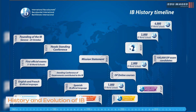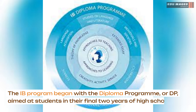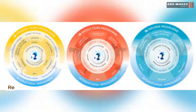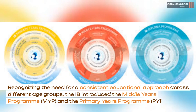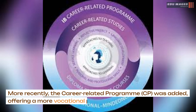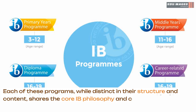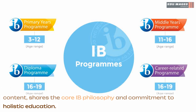The IB program began with the Diploma Programme, or DP, aimed at students in their final two years of high school. Recognizing the need for a consistent educational approach across different age groups, the IB introduced the Middle Years Programme, MYP, and the Primary Years Programme, PYP. More recently, the Career Related Programme, CP, was added, offering a more vocational path for students. Each of these programs, while distinct in their structure and content, shares the core IB philosophy and commitment to holistic education.